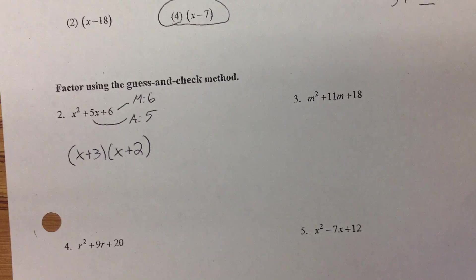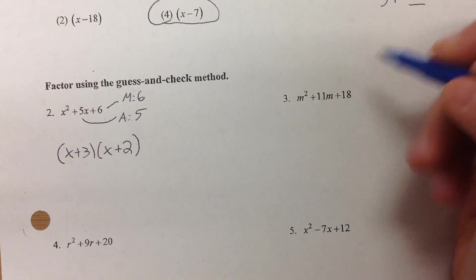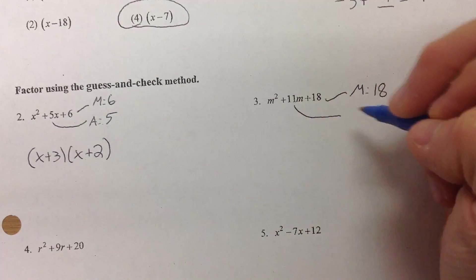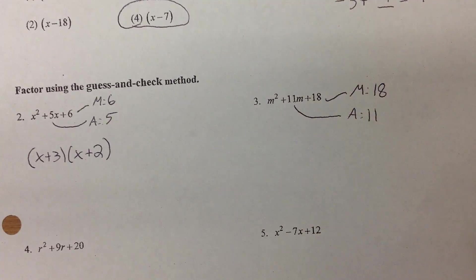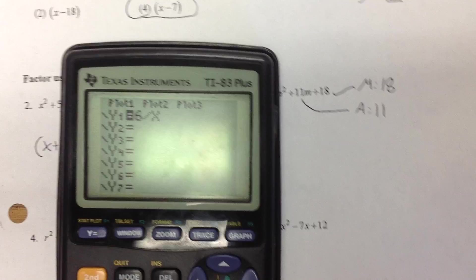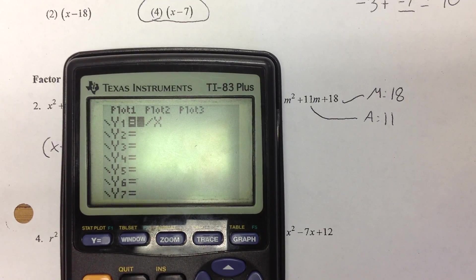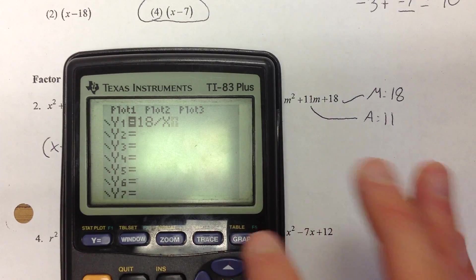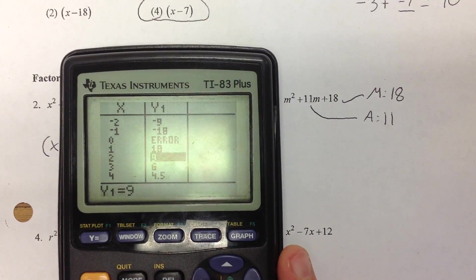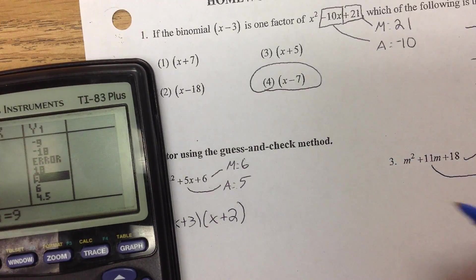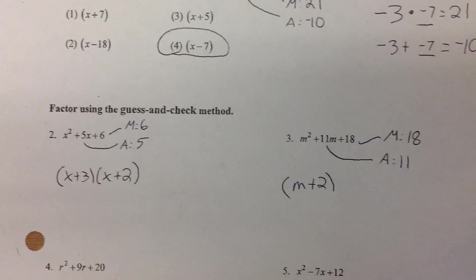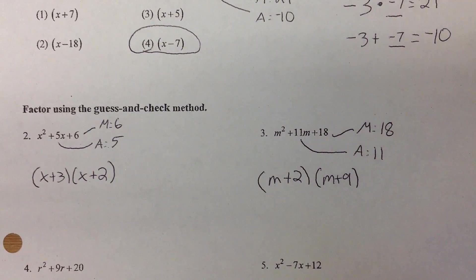On number 3, m squared plus 11m plus 18. We're looking for two numbers that multiply to 18 and add to 11. If you can do it in your head, that's fine. If you need the calculator, go to Y=, type 18 divided by x, second graph. Going through: 1 and 18 — nope, doesn't add to 11. 2 and 9 — yes, those add to 11. So the answer is m plus 2 and m plus 9.